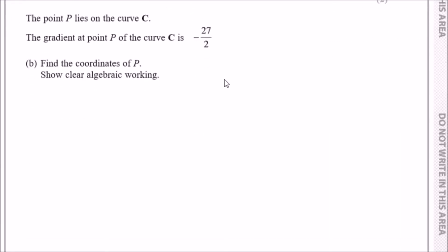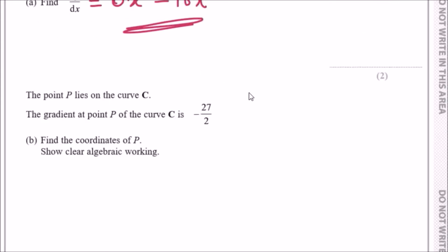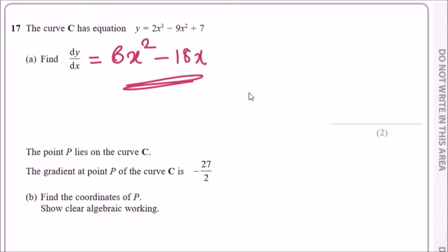Next question: the point P lies on the curve C. The gradient at point P of the curve is -27/2. Find the coordinates of P, showing clear algebraic working. One thing to know about these type of questions is that the gradient always refers to dy/dx, because dy/dx is known as the gradient equation.